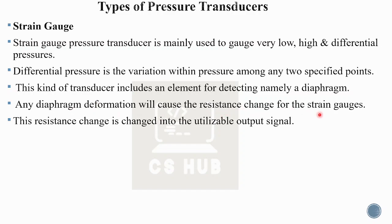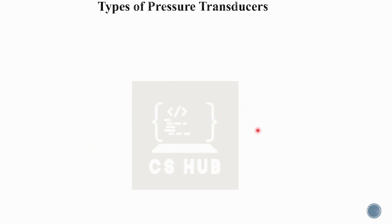This pressure transducer uses a particular strain gauge. Pressure changes cause diaphragm changes. The diaphragm deformation converts into a resistance change. This resistance change is then changed to a utilizable output signal. That is how the strain gauge pressure transducer works.